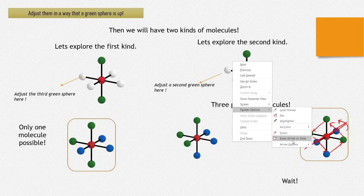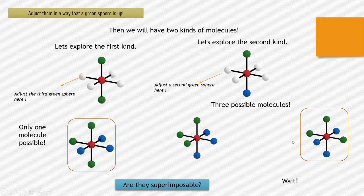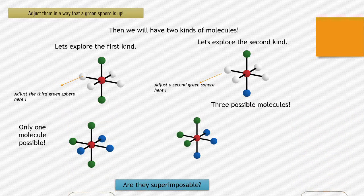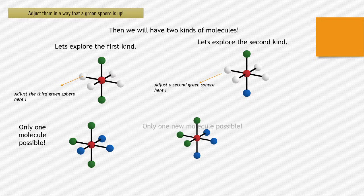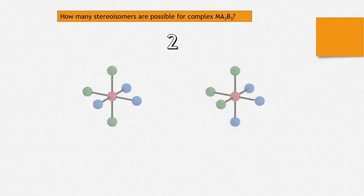Interesting. That way, we are pretty sure that there can be only two molecules with the structure MA3B3. Only one new molecule is possible in the second kind. So the answer is two, and these two look like this.